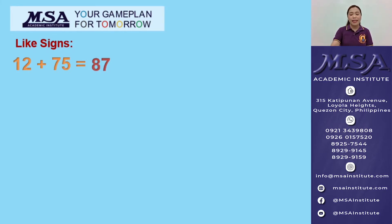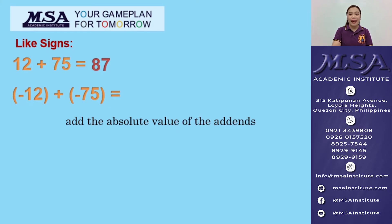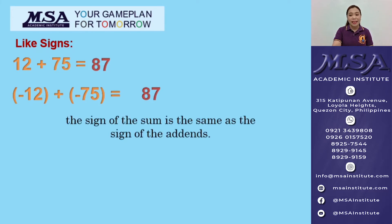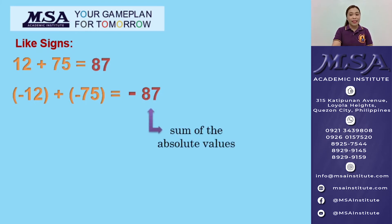What about if we have both negative? Example: negative 12 plus negative 75. All you have to do is add the absolute values of the addends. The absolute value of negative 12 and negative 75 are 12 and 75 respectively. So we just need to get the sum, which is 87. The sign of the sum is the same as the sign of the addends — you can just copy the common sign. So the sign of the sum must be negative. So negative 87 is the answer.